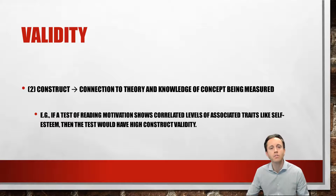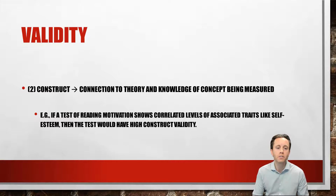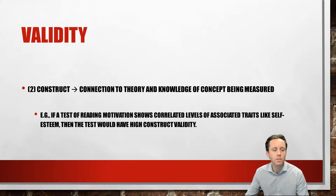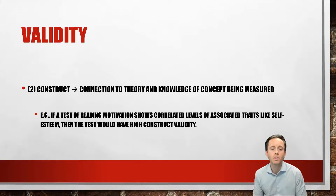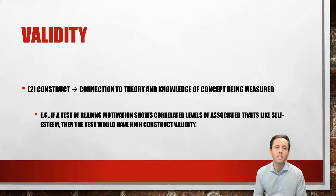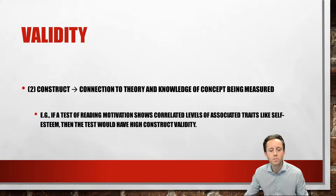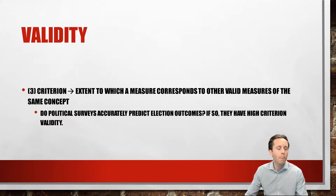The second kind of validity is construct validity. We're talking about the connection to theory and knowledge about the concept being measured. Take a test of reading motivation, for instance — that could show highly correlated levels of associated traits, such as self-esteem. If that's the case, we know there are high levels of construct validity.